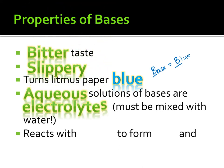Aqueous solutions of bases are electrolytes — exactly what we wrote down for acids. Bases are electrolytes because they have dissolved ions in solution. Think of the NaOH example: when sodium hydroxide dissolves, we're left with a positive sodium ion and a negative hydroxide ion. Because NaOH dissolves and forms ions or charged particles, they can conduct a current — also known as electrolytes.